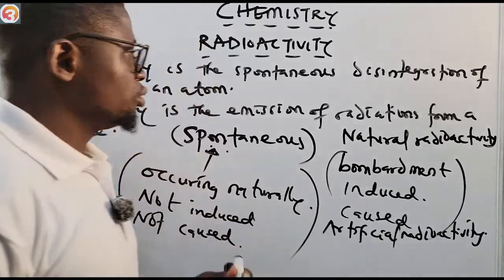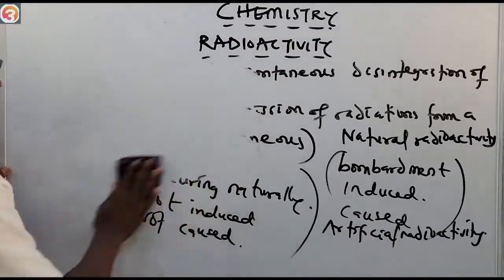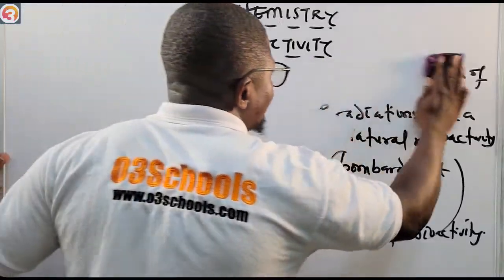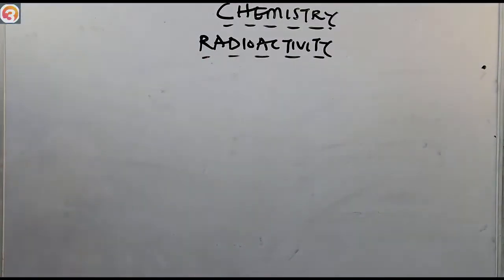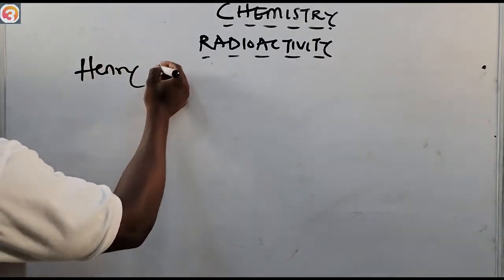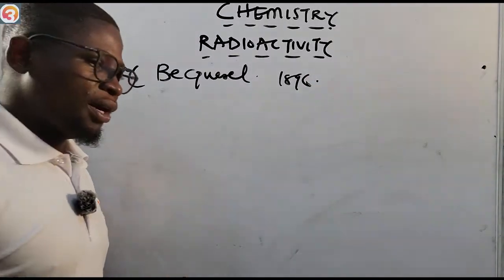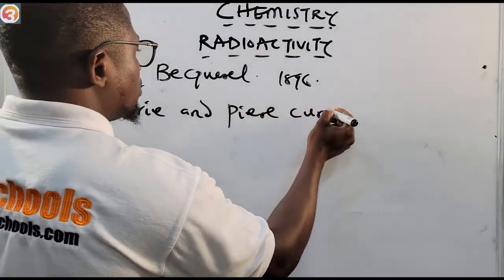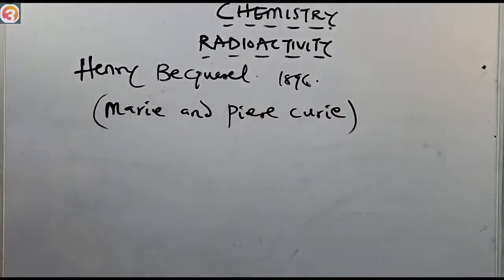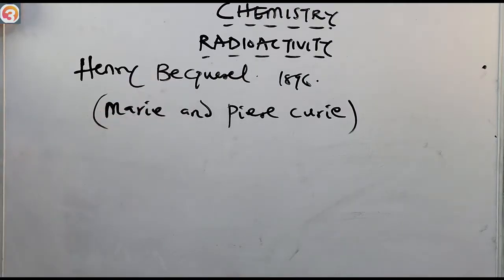Natural radioactivity began in 1896 by a man called Henry Becquerel. Other pioneers, as it relates to radioactivity, include Marie and Pierre Curie — husband and wife. These were the other pioneers in the field of radioactivity. The study began with Henry Becquerel in the year 1896.